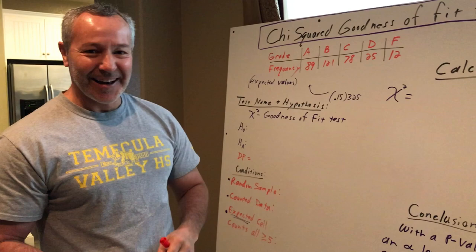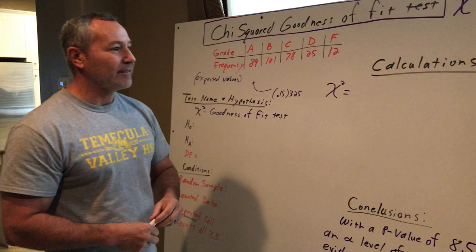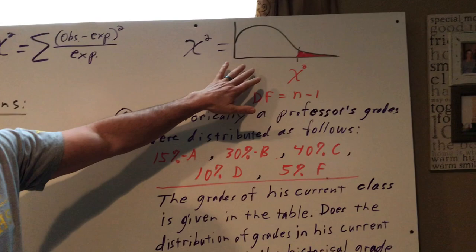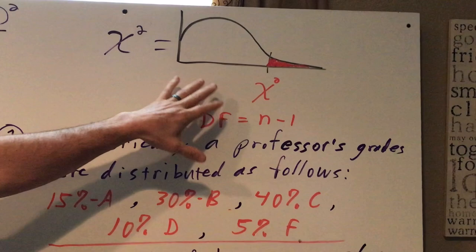So today we're going to do the chi-squared goodness of fit test. The chi-squared is really different than our other ones. It has a distribution that's right skewed and it'll always be this. It can't be like a two-sided test or anything. This will be the way the distribution always is.